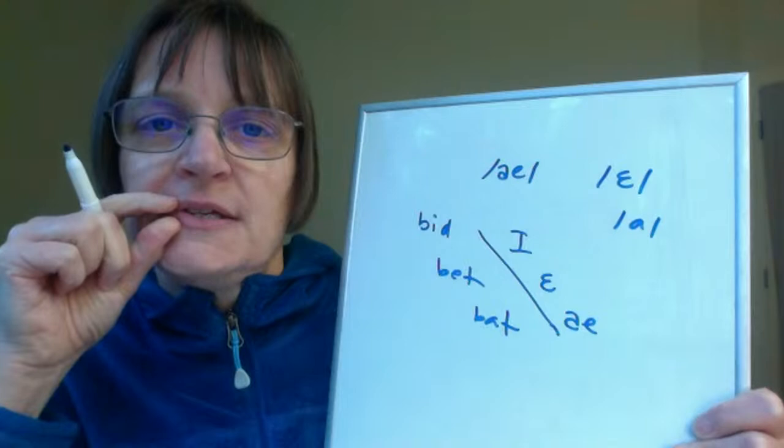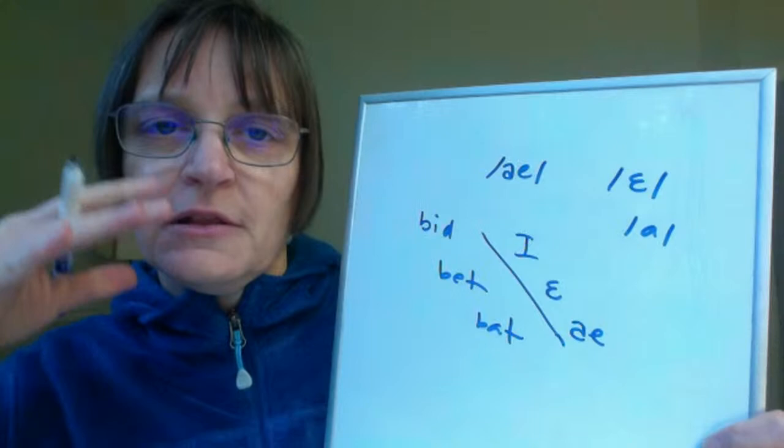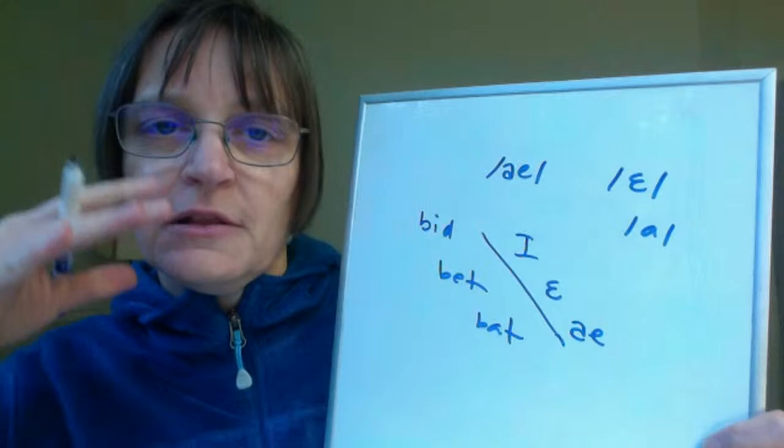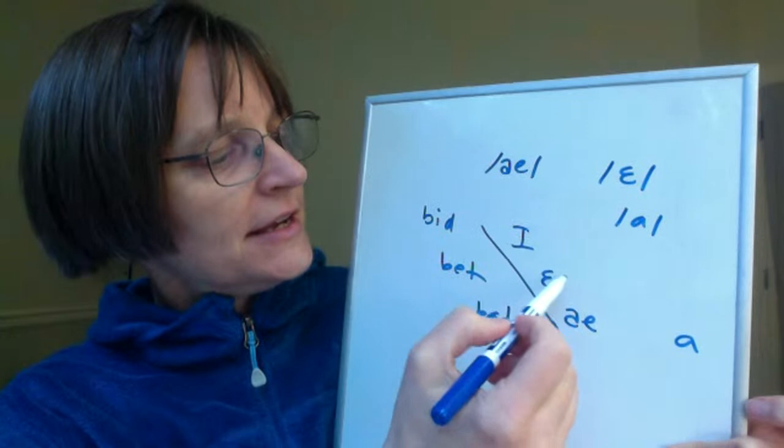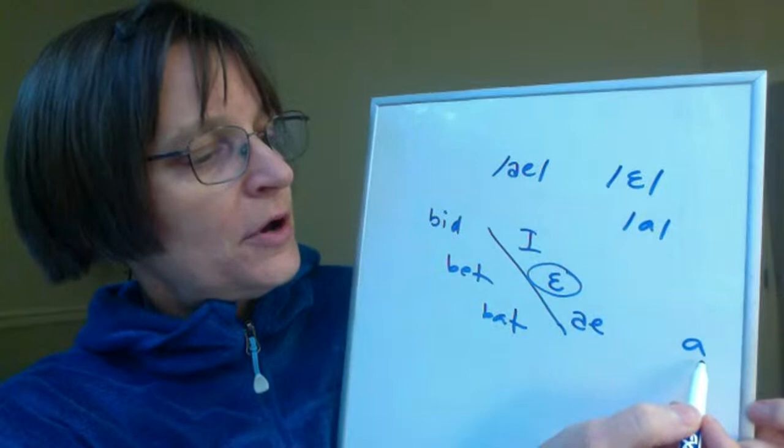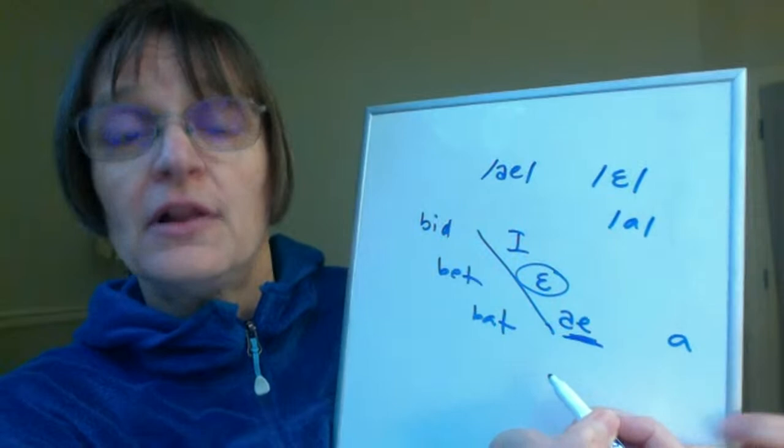The 'ah' vowel is open and in the back. So what she's asking is: if she's trying to say 'eh' — like in 'bet' or in 'red tent' — but opening the mouth more like 'ah,' will she get that 'ah' vowel? And I believe yes, that's a good way to approach it.